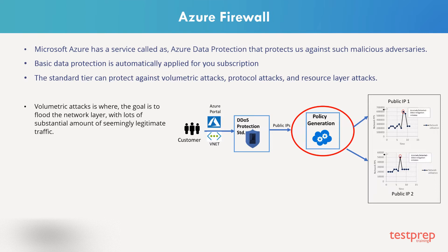Volumetric attacks aim to flood the network layer with a substantial amount of seemingly legitimate traffic. Protocol attacks render the target inaccessible by exploiting a weakness. Resource layer attacks target application packets to disrupt the transmission of data between hosts.